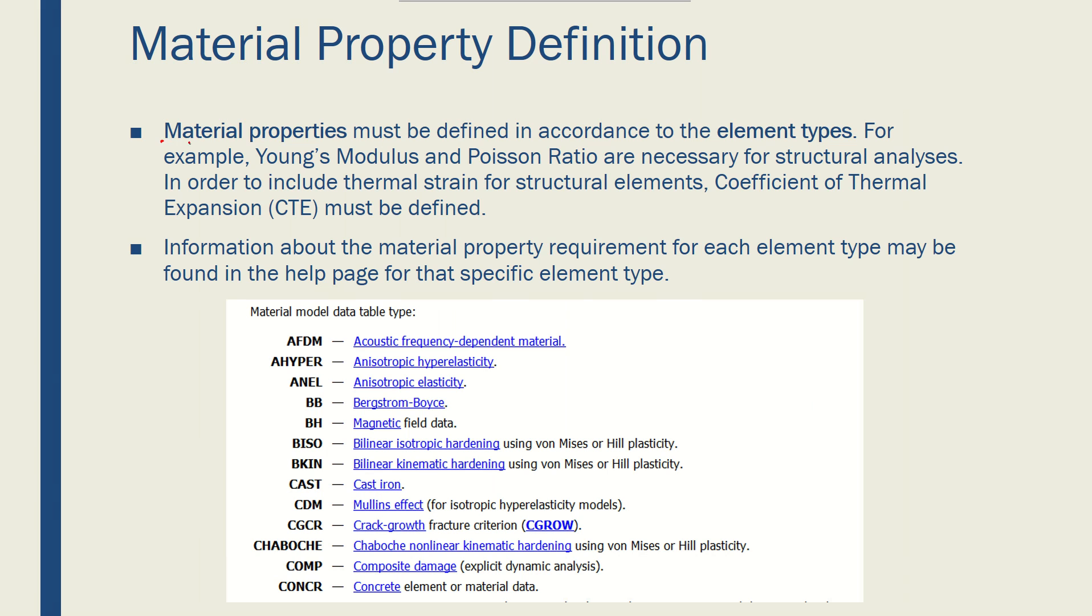Material properties will be defined in accordance with the element type that is selected for the simulation. Again, Young's modulus and Poisson ratio are necessary for structural analysis, and you could also use coefficient of thermal expansion, or CTE, to see the effect of temperature on the deformation of a structural element type.